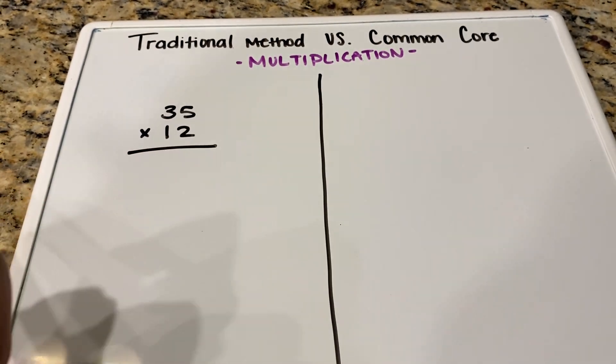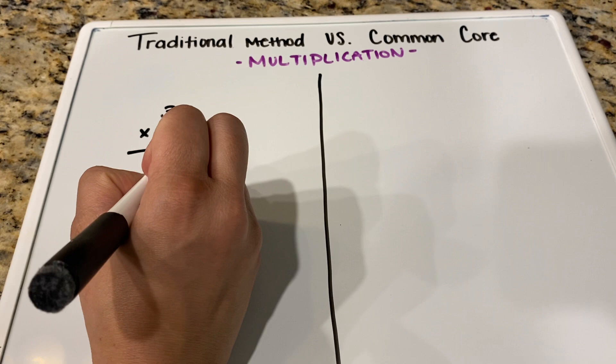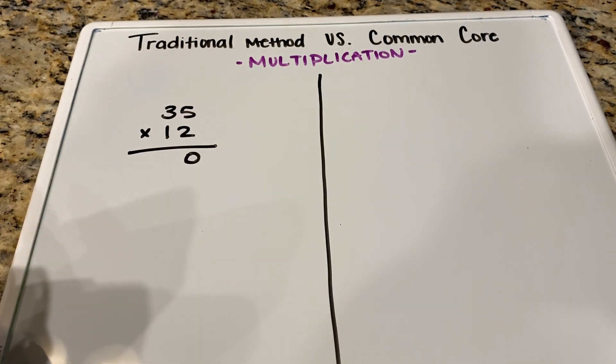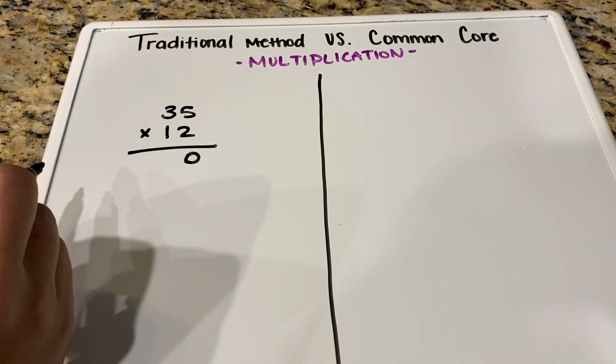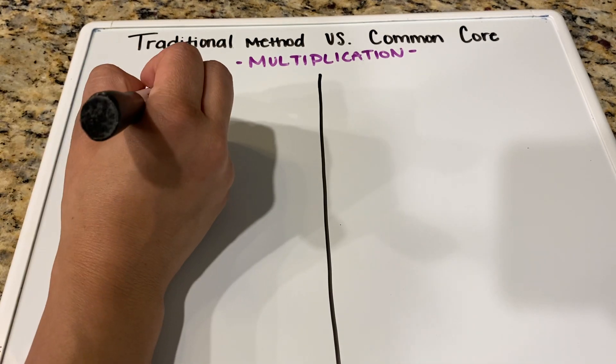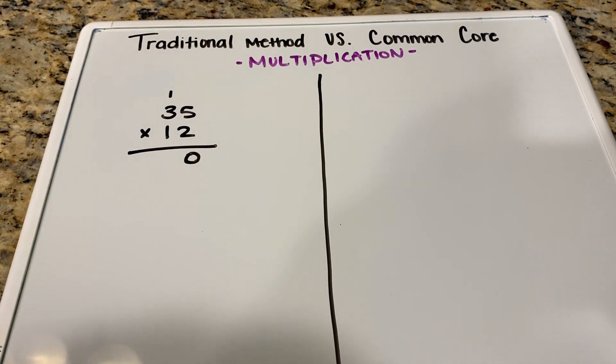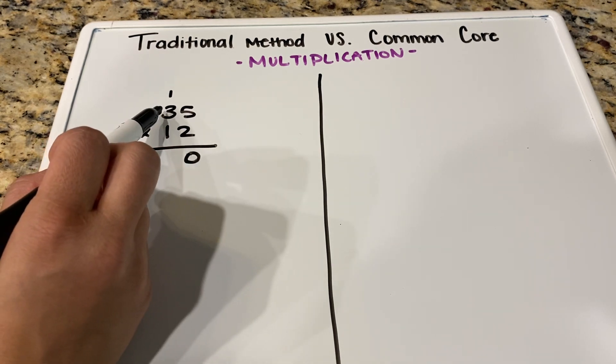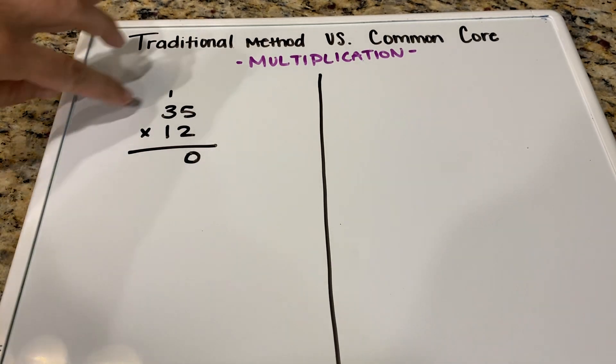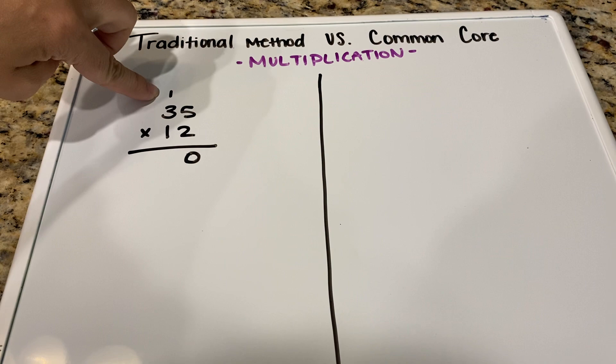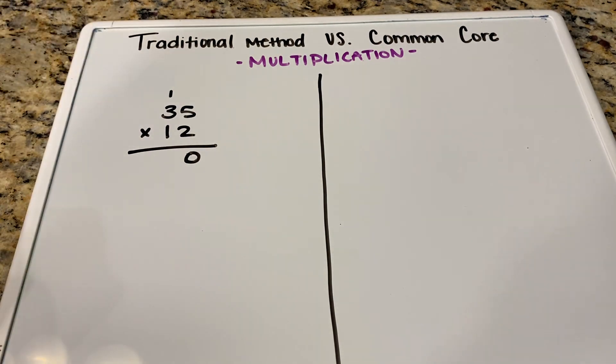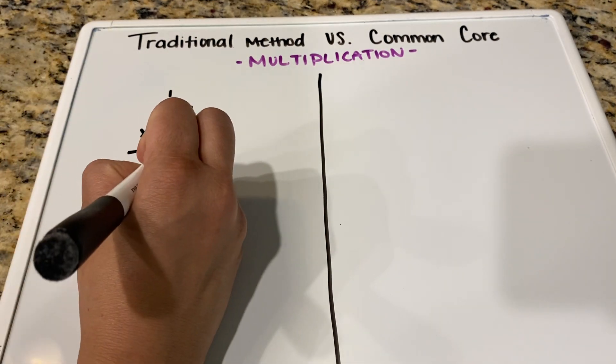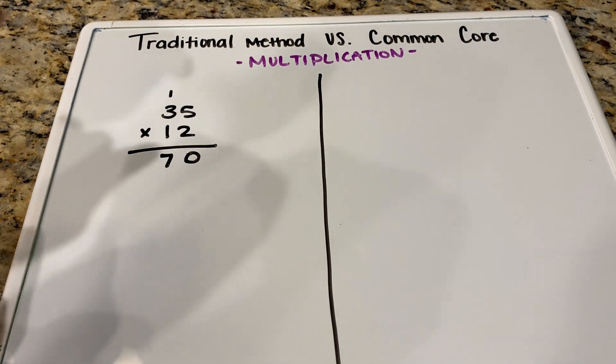So 2 times 5 is 10. Because it is a number above 9, we're going to put the 0 from the ones down below. We're going to carry the 1 on top into our tens place. From there, we're going to take 2 times 3, which is 6, but we still have this guy up here. So we need to add that. So 6 plus 1, which makes it 7. And we are now done with our 2.